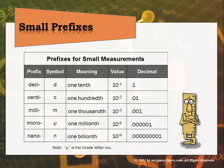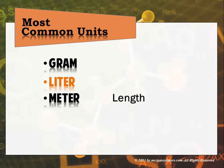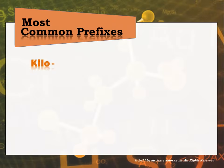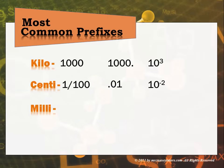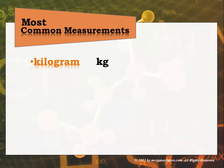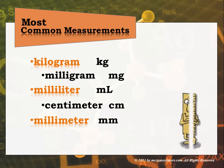Our most common units are going to be gram, liter, and meter, and in the laboratory we will of course be using Celsius for temperature. Our most common prefixes are kilo, centi, and milli. The most common measurements we will see in the laboratory are kilogram, milligram, milliliter, centimeter, and millimeter. Grams, liters, and meters themselves will also be used quite a bit, along with these variations, in the laboratory.